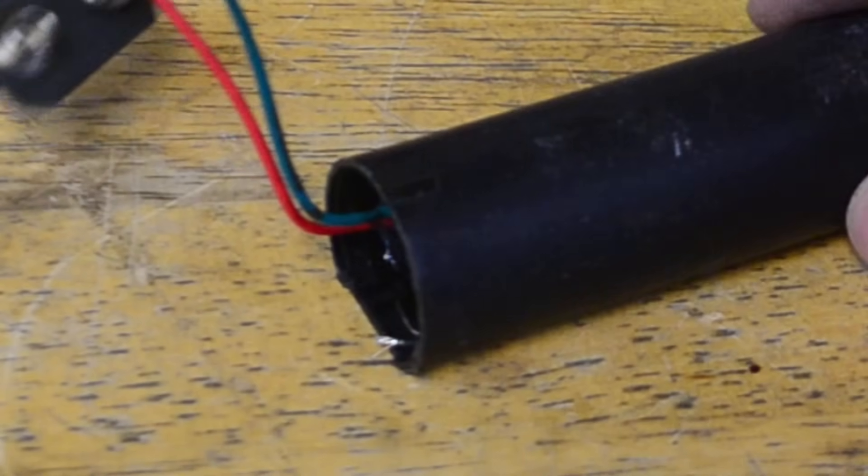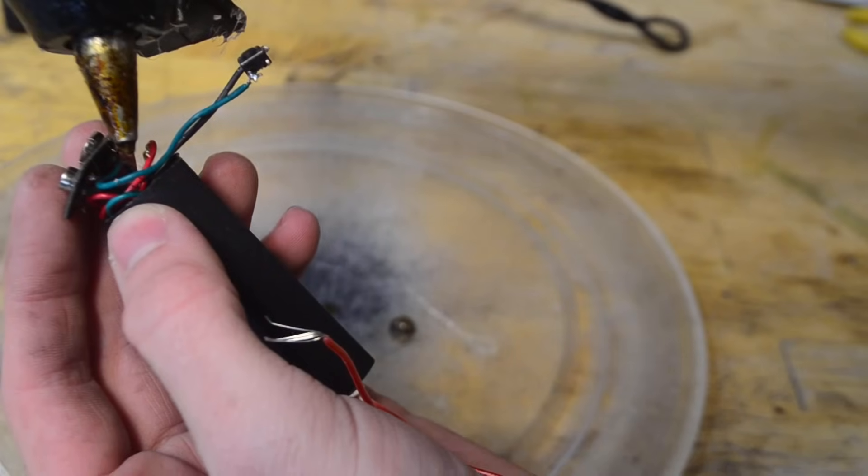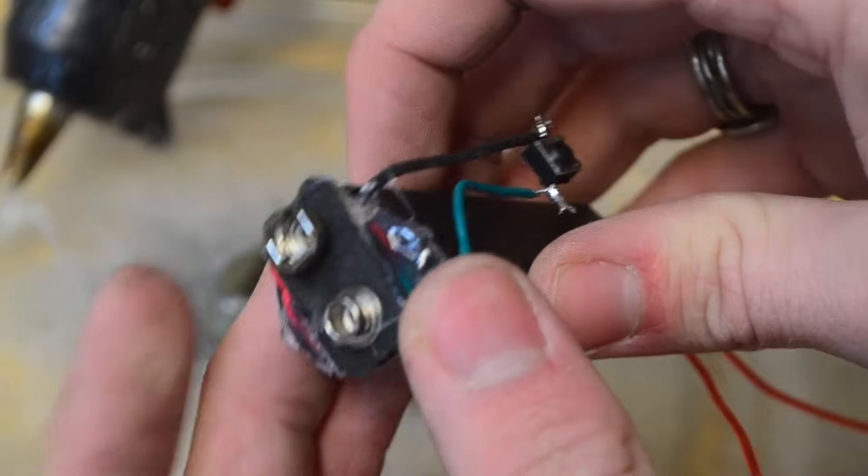There's a little crevice at the bottom of the boost converter. As you can see, we can just tuck all those wires down into there. Now I'm going to take some hot glue and squirt it into here. Now that the glue is dried, you can see that all the wires stay in place down there at the terminal.